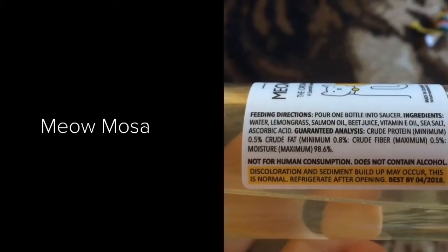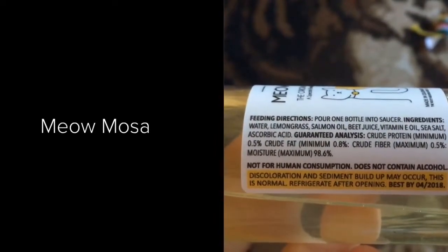Last but not least, we have Meowmosa. The ingredients are water, lemongrass, salmon oil, beet juice, vitamin E oil, sea salt, and ascorbic acid.